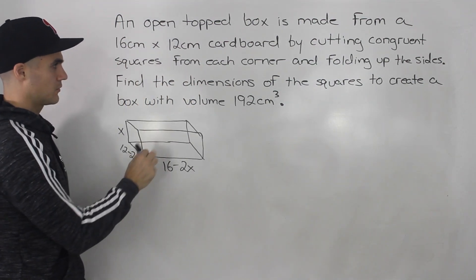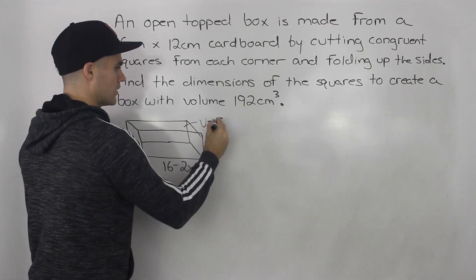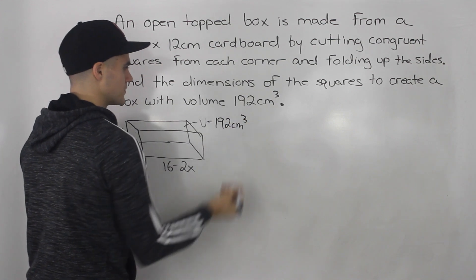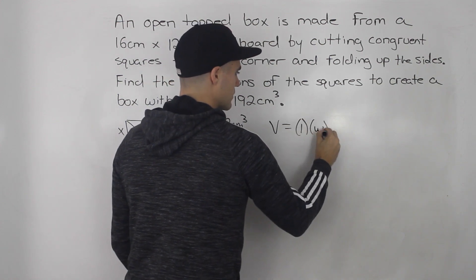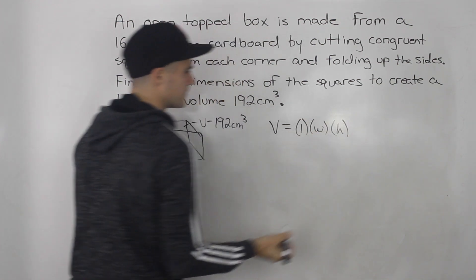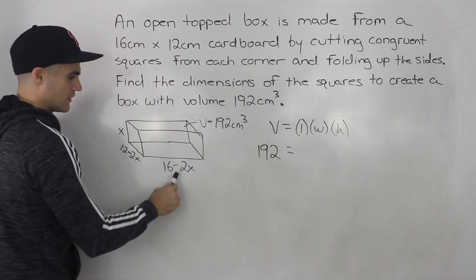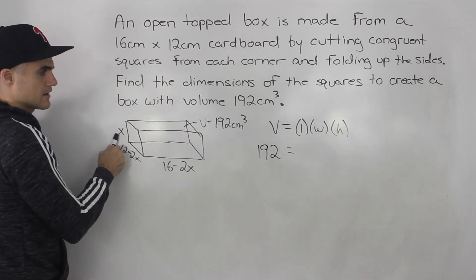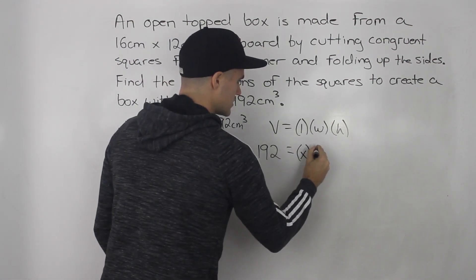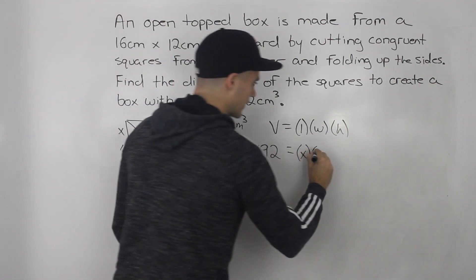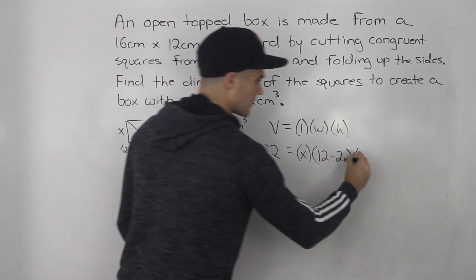We have that box here and we're told it has a volume of 192 centimeters cubed. The volume of a rectangular box is length times width times height, so 192 has to equal the height times the width times the length — that's x times (12 minus 2x) times (16 minus 2x).